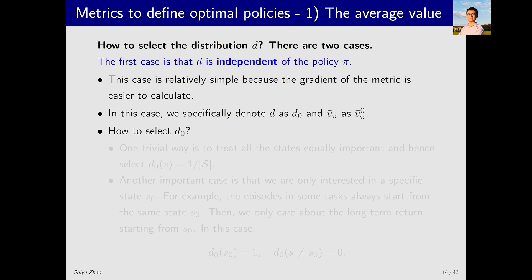When d is independent of π, how should we choose it? The simplest choice is to assume that all states are equally important. That is, the weight or probability assigned to each state is the same. In this case, this is n, the number of states, and each state has a weight of 1/n. When summed, it equals 1. This is essentially a uniform distribution.